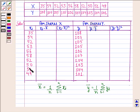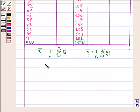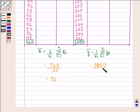The summation of Xi is 510 and the summation of Yi is 1050. The mean of X equals 510 divided by N, where the number of observations N is 10, giving mean X equal to 51. Similarly, mean of Y equals 1050 divided by 10, which is equal to 105. So mean of X is 51 and mean of Y is 105.